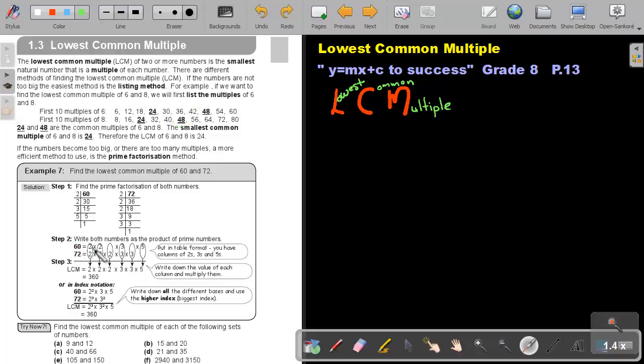Write 60 and write it in factor form. Write 72 and write it also in factor form. Try to write the same numbers underneath each other. And now you are taking all the pairs, full pairs as well as half of the pairs. And you just write down all the factors. And if you multiply it, you will get 360.